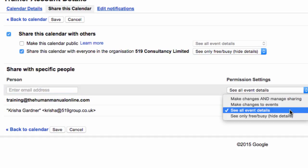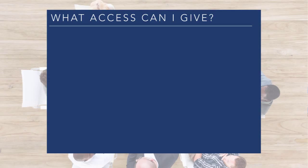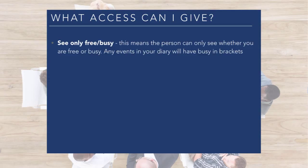There are four different levels of access. The first is 'See only free/busy'. This means the person can only see whether you are free or whether you're busy. Any events in your diary will have 'busy' in brackets.